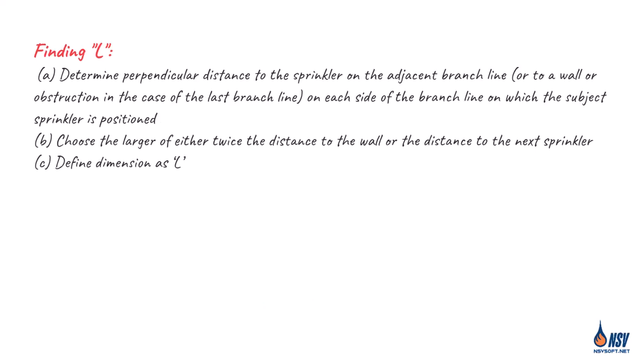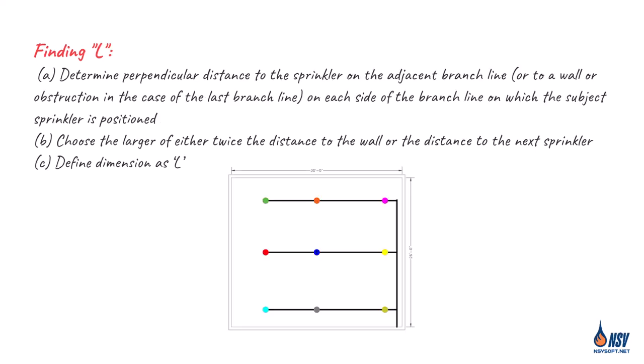Similarly, L represents the spacing between branch lines. It is calculated by measuring the perpendicular distance to the sprinkler on the adjacent branch line or the nearest wall. Again, the larger value, either twice the distance to the wall or the distance to the next sprinkler, is used as L.